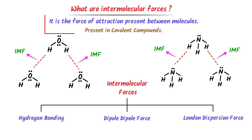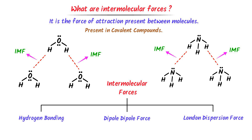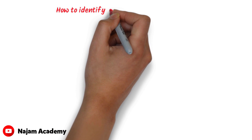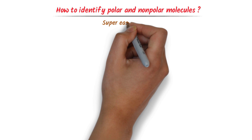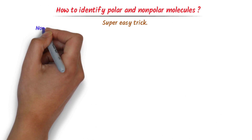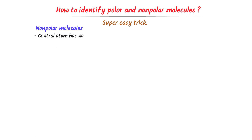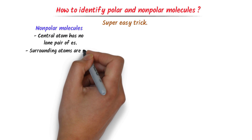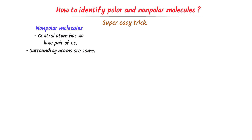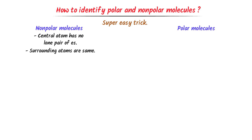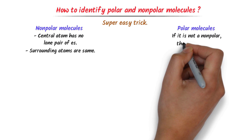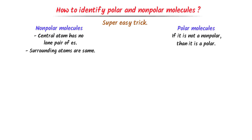Remember that intermolecular force is the force of attraction present between molecules. Now let me teach you how we can identify polar and non-polar molecules. There is a super easy trick. For non-polar molecules, if the central atom has no lone pair of electrons and the surrounding atoms are the same, then this molecule is a non-polar molecule. In case of polar molecules, if it is not a non-polar molecule, then it is a polar molecule.